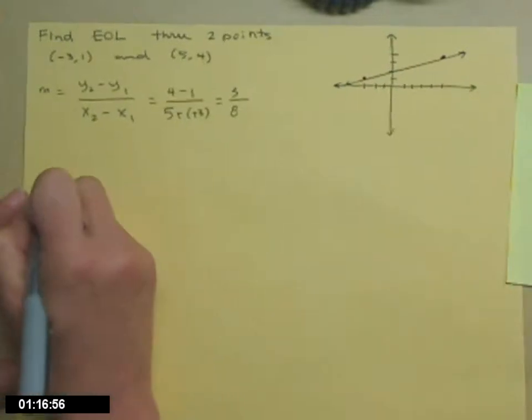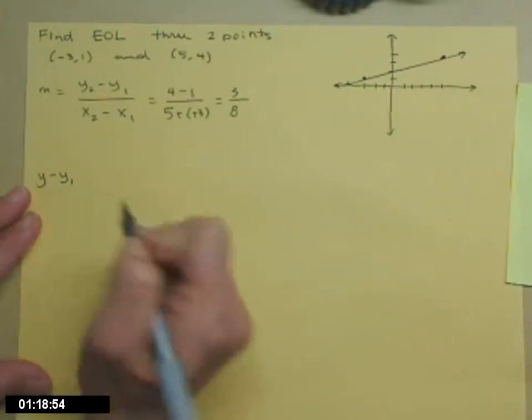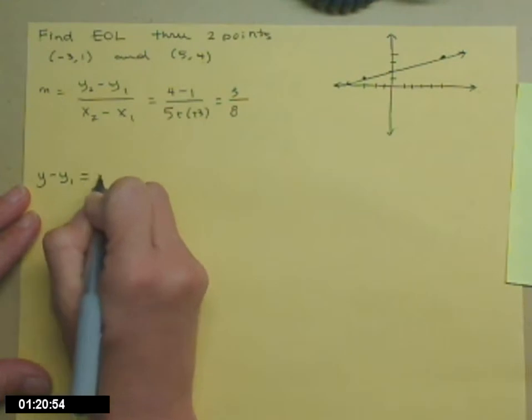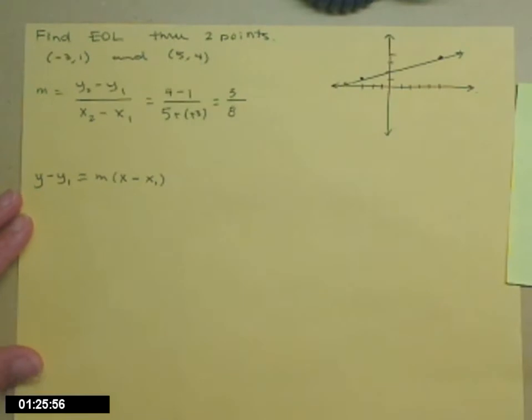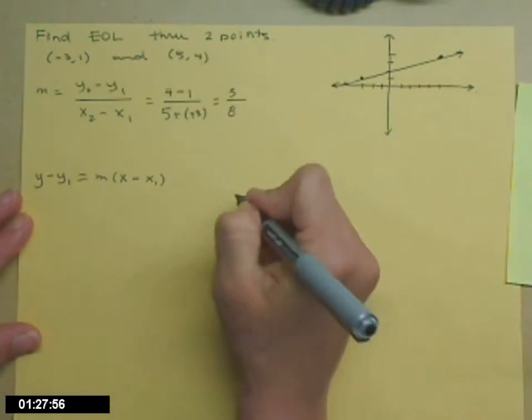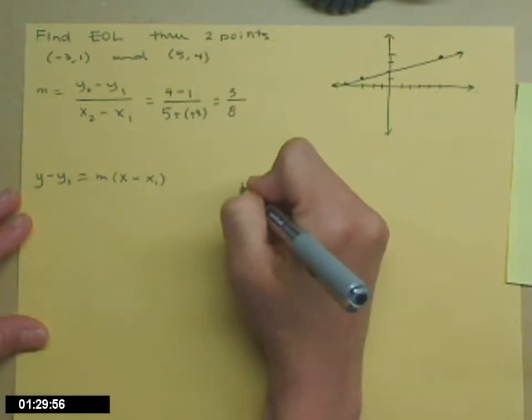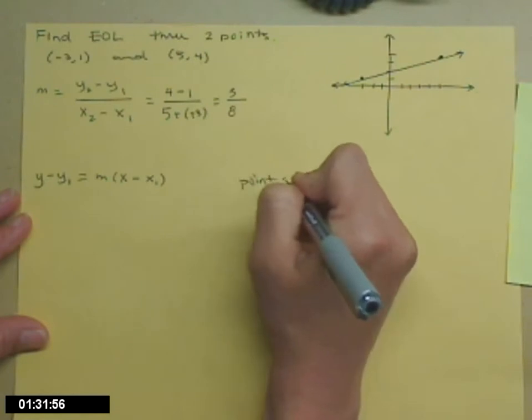A couple of ways you can do it. One of the easiest: y - y₁ = m(x - x₁). Then you just solve for y. This is the point-slope formula of a line, point-slope form.